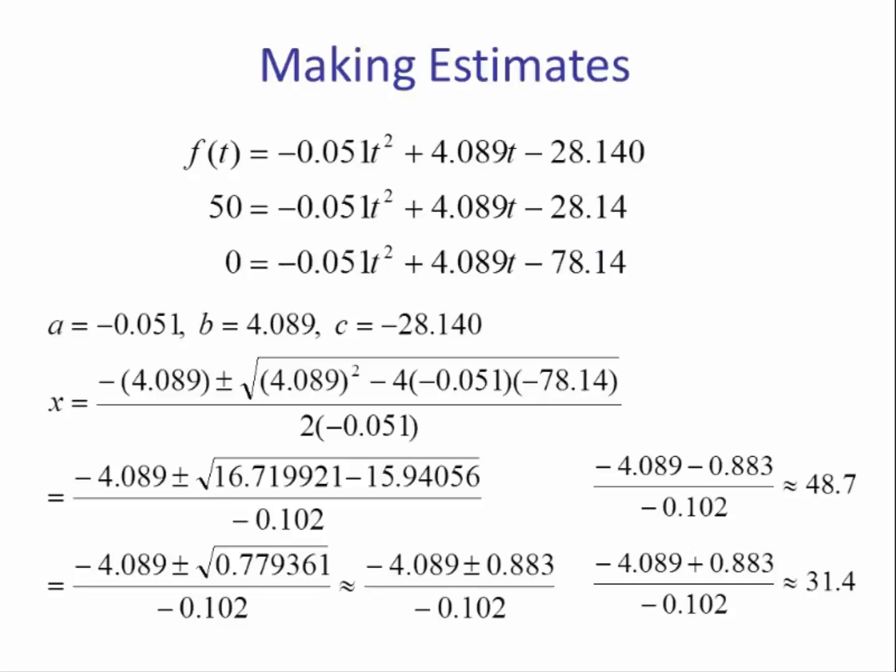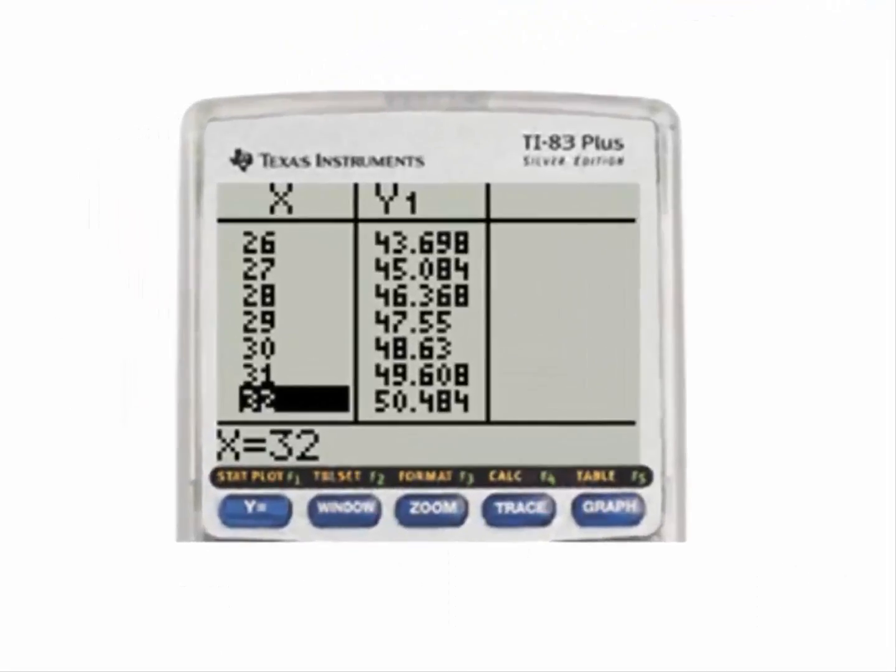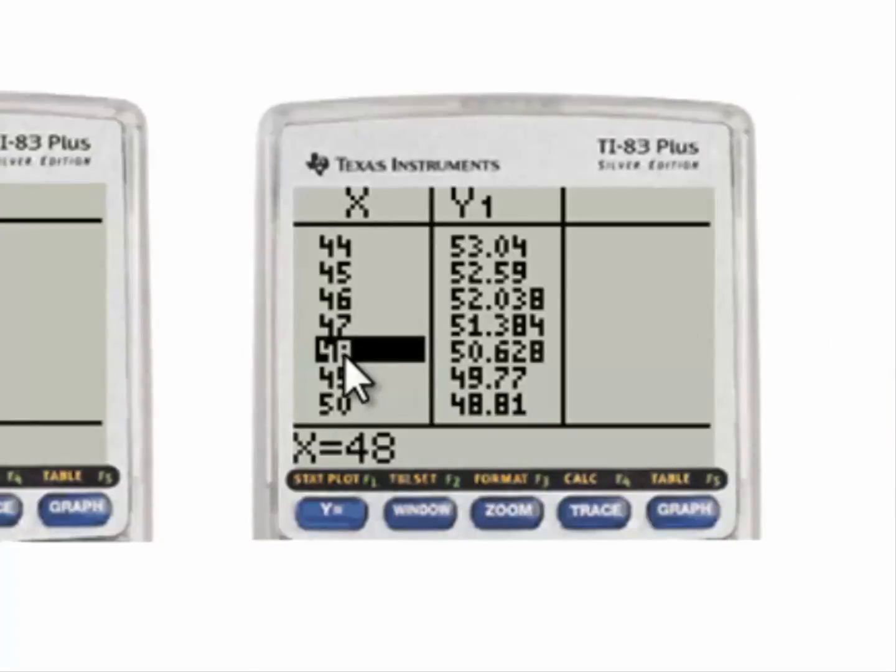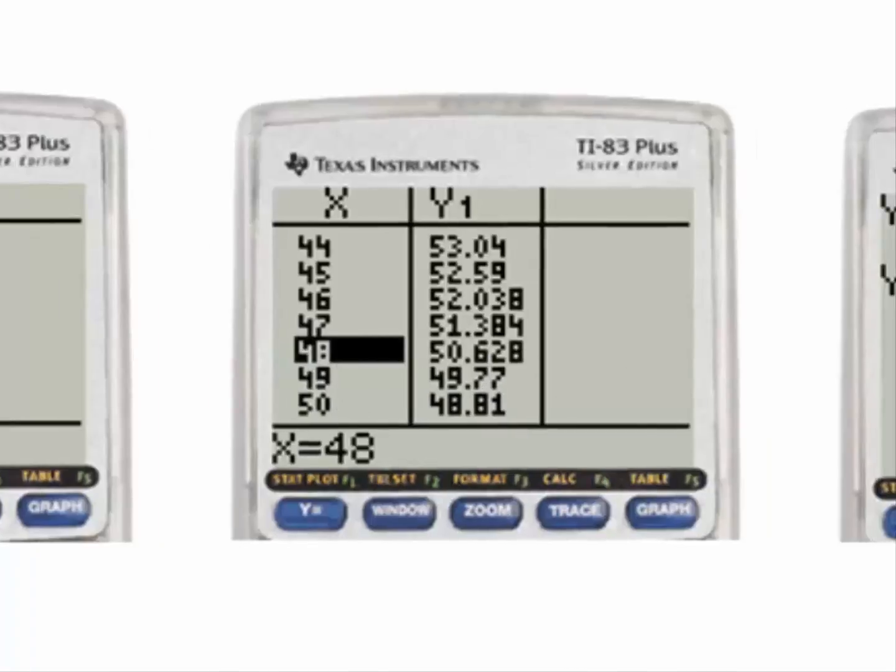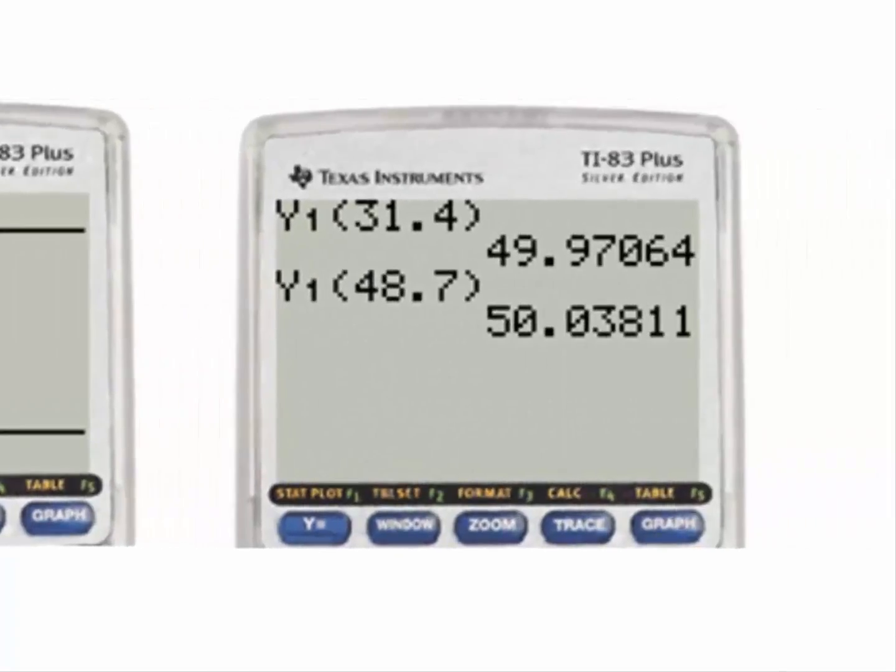To verify this using the graph and calculator, we can use the table feature. We can see when x is 33, we have the percentage a little bit more than 50%. And when x is 48, the percentage is a little bit more than 50%. Using the var key, we can type in 31.4 and we get approximately 50%, and 48.7 which is approximately 50%. So at those two ages the model is predicting half the workers will be using a computer at their job.